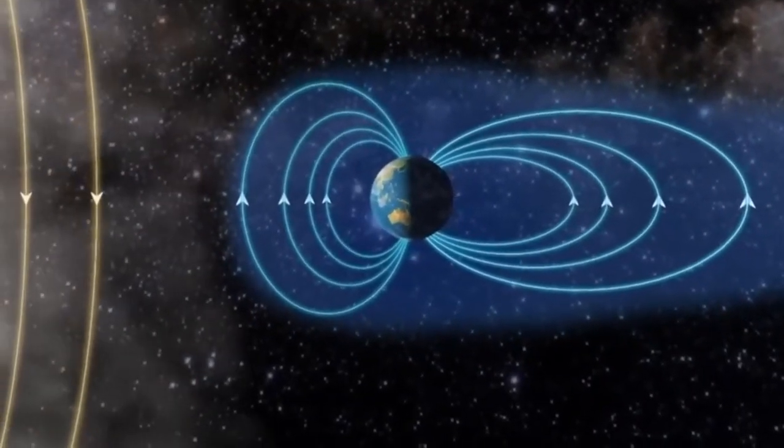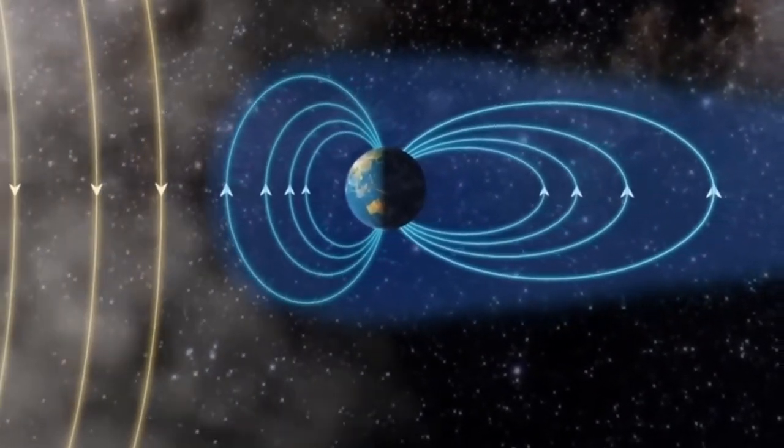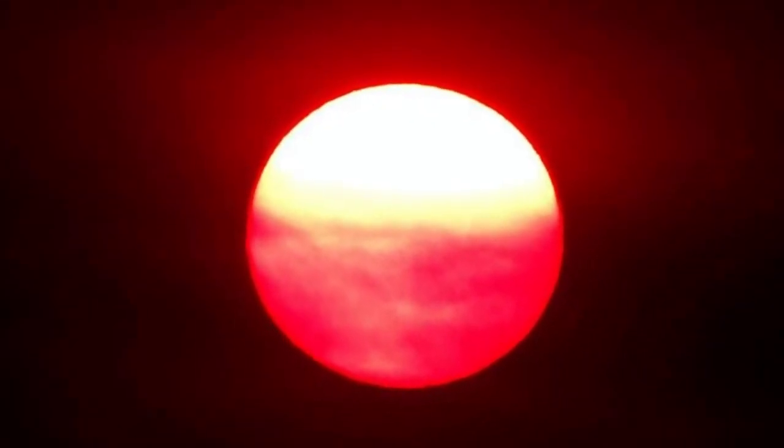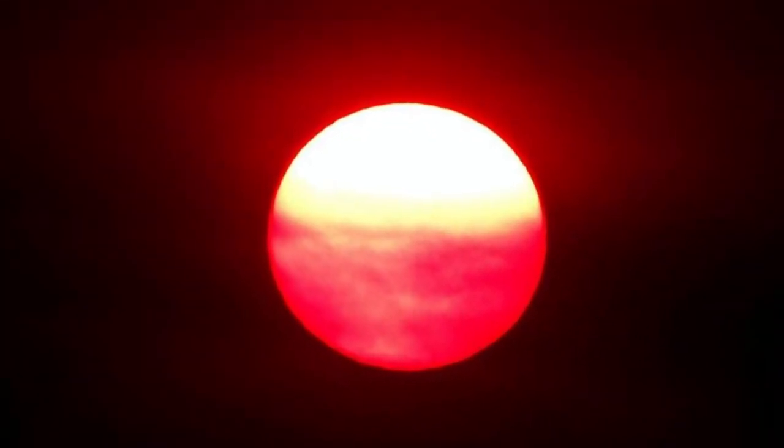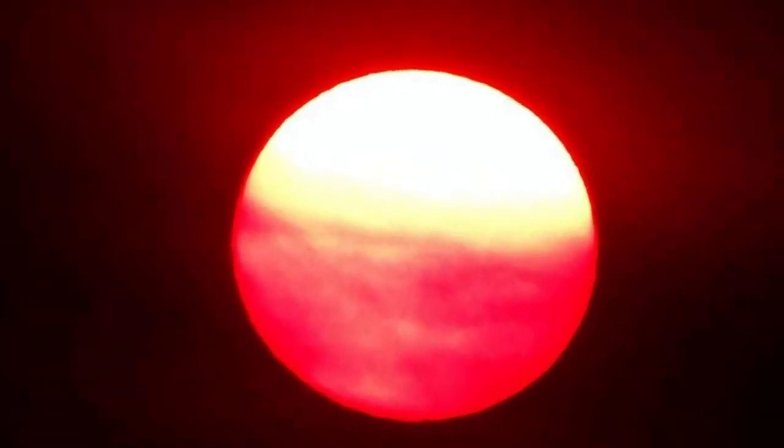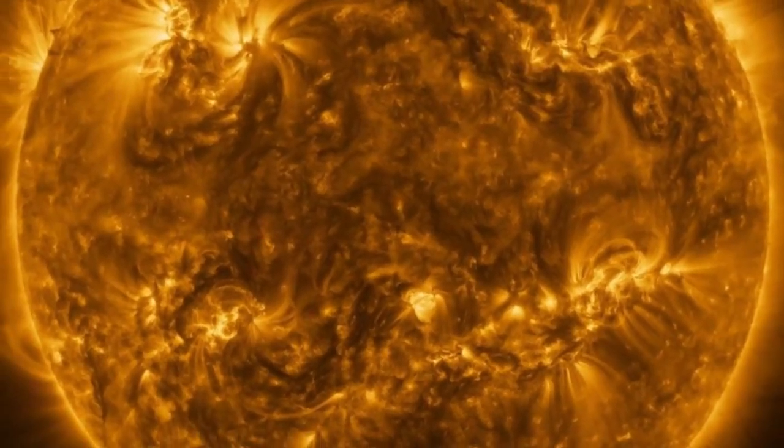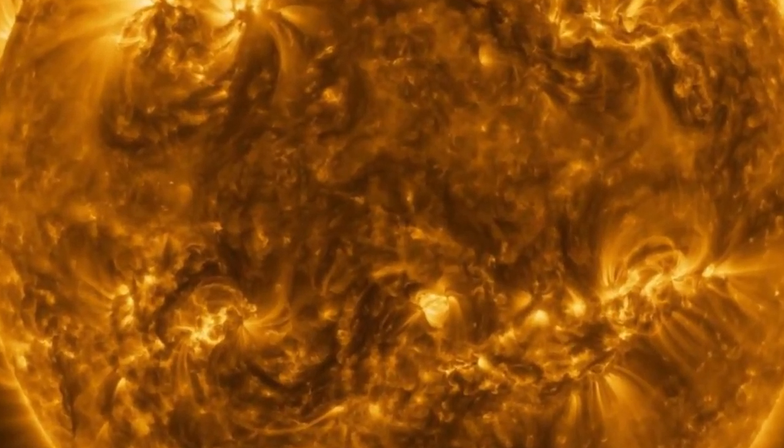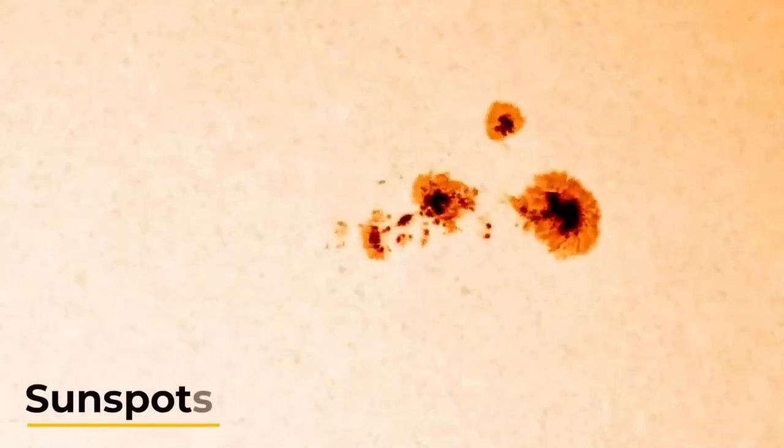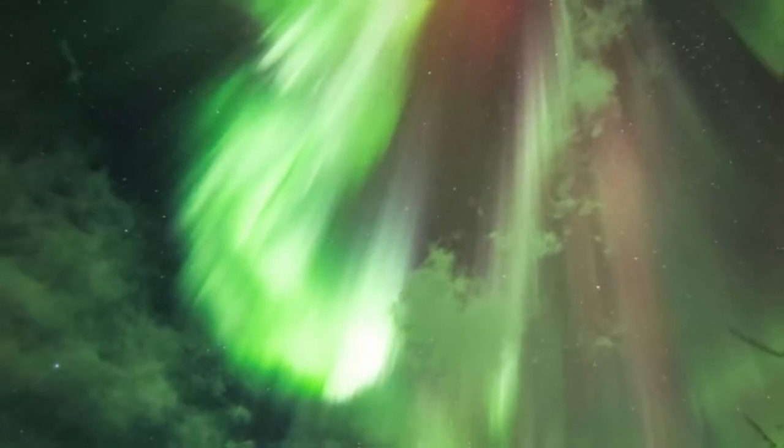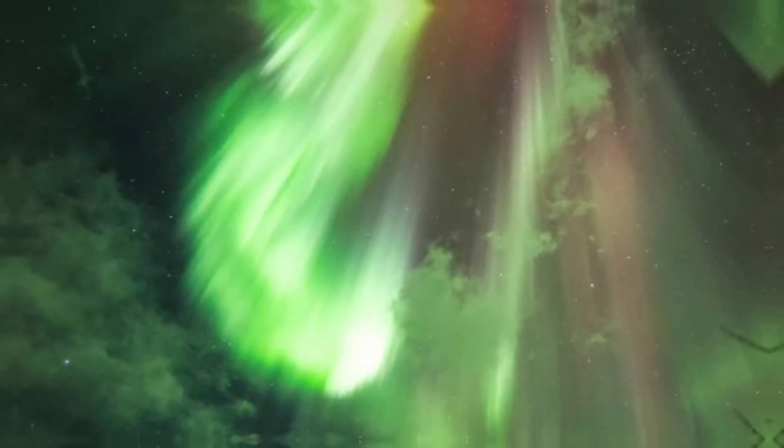Fast forward to the present day, and we find ourselves on the brink of another solar spectacular: a premature solar maximum and the impending reversal of the sun's magnetic field. As the sun enters the peak of its 11-year cycle, anticipation grows for heightened solar activity, including increased solar flares, sunspots, and coronal mass ejections. While these phenomena promise breathtaking auroral displays, they also raise concerns about the vulnerability of our technology-dependent society.